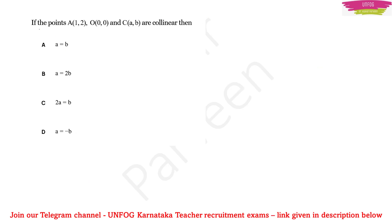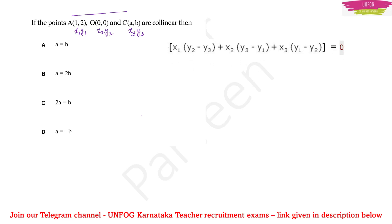Based on the condition of collinearity, consider this example: if the points A(1, 2), O(0, 0), and C(a, b) are collinear, four options are given. Since they are collinear — all lying on a straight line — assign x1 y1 = (1, 2), x2 y2 = (0, 0), and x3 y3 = (a, b). Use the collinearity condition equation, derived either by equal slopes or by determinant.